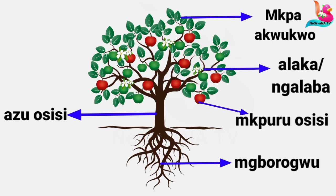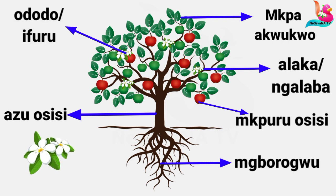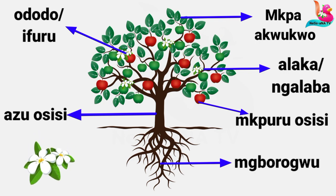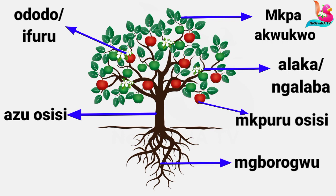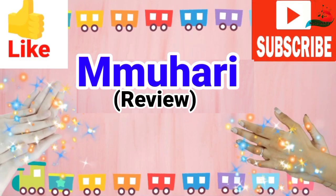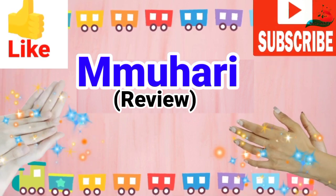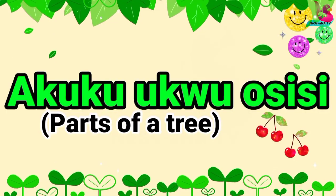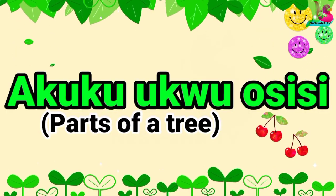Azoo osisi. Azoo osisi — fruits. Ododo mobo ifuru. Azoo osisi — fruits. Our topic is what? Azoo osisi — fruits.